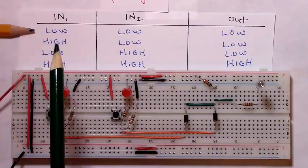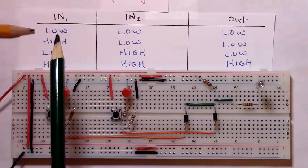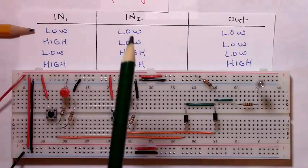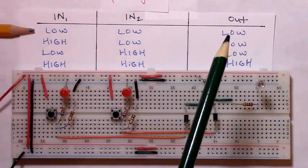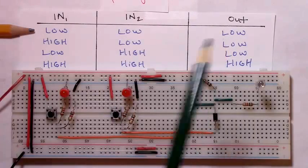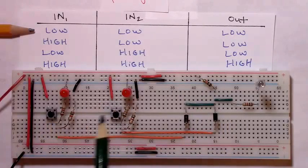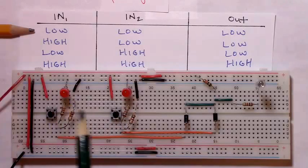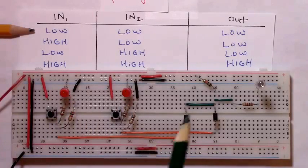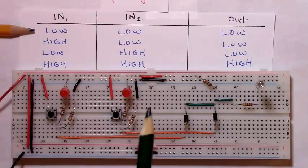Reading from left to right: what would we expect when the first input is low and the second input is low? Well, then we should expect the output to be low, and that's the state it's currently in. We're not pressing these buttons, so input one is low, input two is low, and lo and behold the output is low.